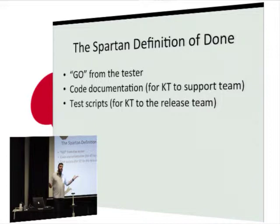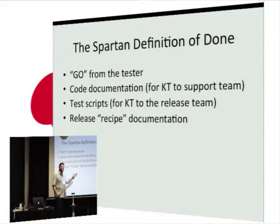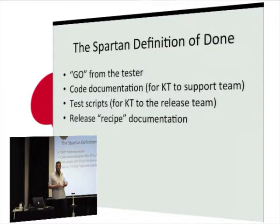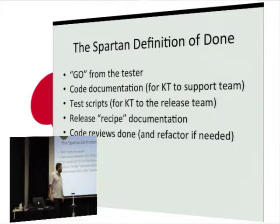Test scripts are produced by the tester in the team and are for handover to the release team, who need to repeat them in QA. The release recipe documentation is something my team added after running into problems on a previous project — we discovered there were configuration changes on servers, database scripts, and all kinds of steps we were performing that weren't documented. In Philips we've got two dev environments, QAF, QAT, staging, and then production, and you have to be able to repeat your release recipe across each stage.